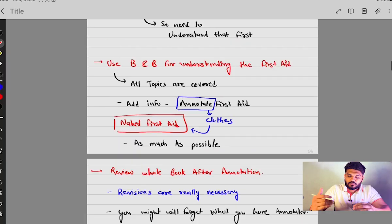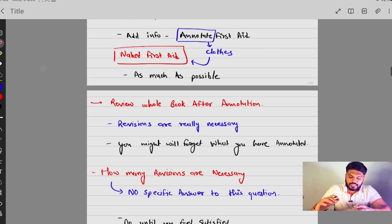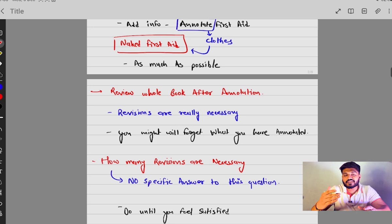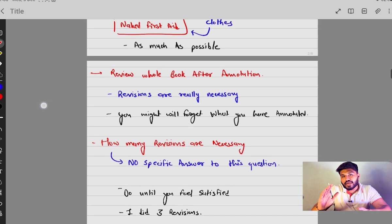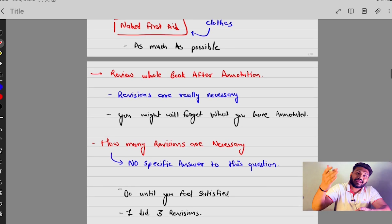Moving on, how many revisions are necessary? There is no specific answer to this question. Some might need two revisions, some might need five revisions. Do until you feel satisfied. Although I did only three revisions, you might need only two revisions. Revision as much as you can do until you feel satisfied. Although you never feel completely satisfied with revision, you need to trust your gut feeling that I have revised it three times, five times, seven times and I know these stuffs. I don't need to revise more and go on to the exam.